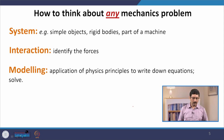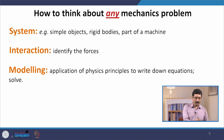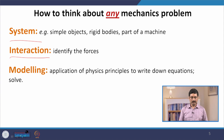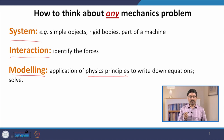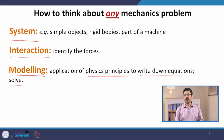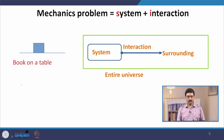How to think about any mechanics problem? We will divide the analysis into three different pieces. The first piece is system — you identify the system. The second piece is interaction — identify the forces. And then you do the modeling, which means to apply the basic physics principles. You do not have to memorize formulas; instead you just remember the basic physics principles, then write down equations, and once you have the equations and know the known and unknown quantities, you solve those equations.